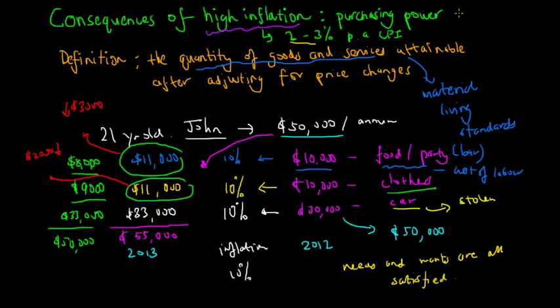High inflation causes our purchasing power to decrease, and this is particularly important because we know that economics is a study of choice and how to maximize living standards. Because now we can see that John isn't maximizing his living standards as he did in the year 2012 where he could have bought food, clothes, and a car from his $50,000 income. In 2013, he can't purchase everything he wants and needs anymore, and so he's left unsatisfied.